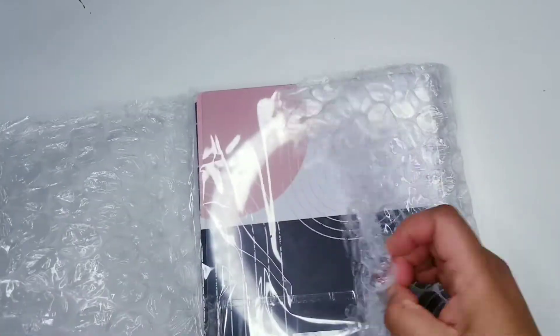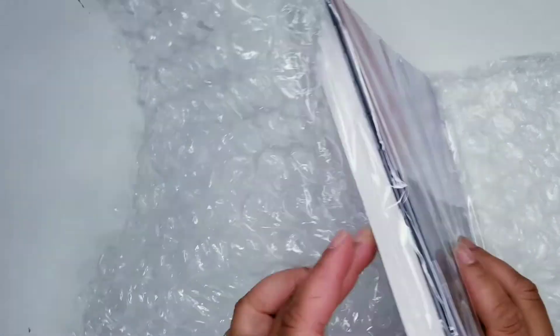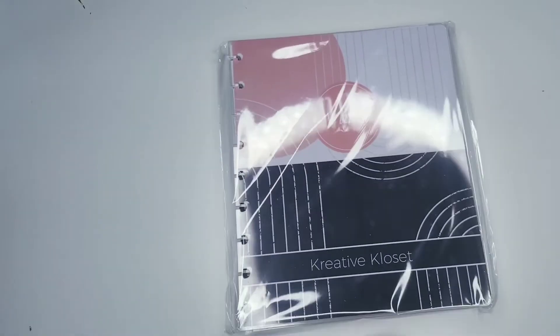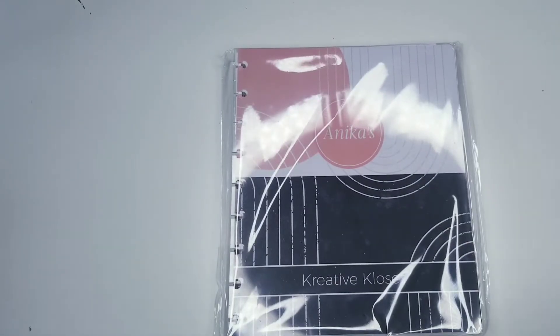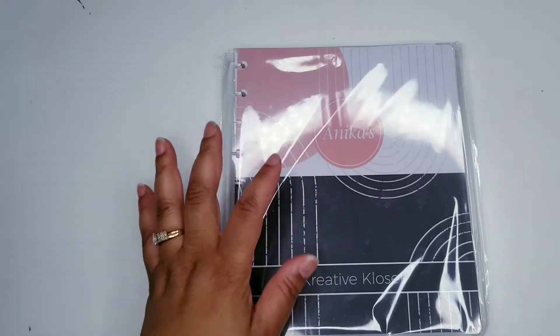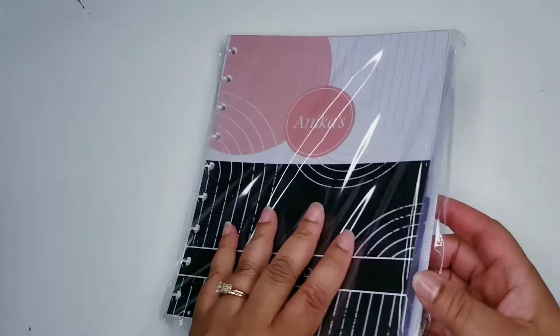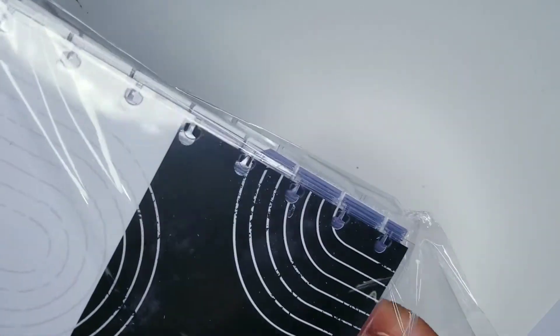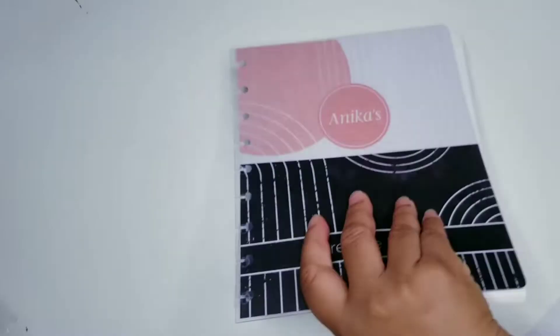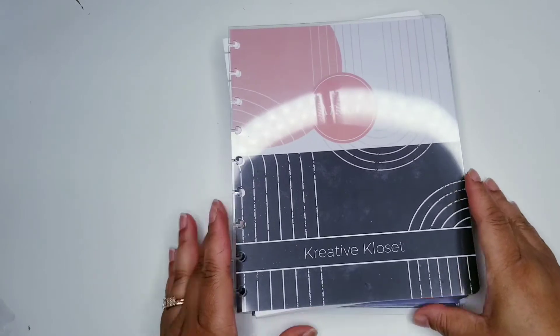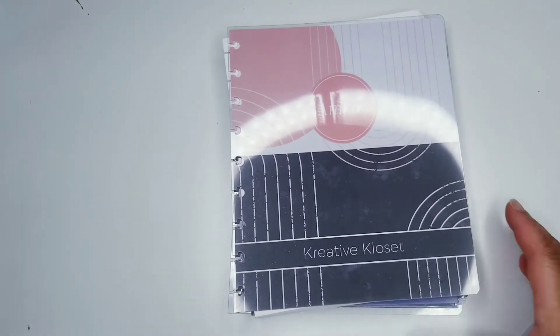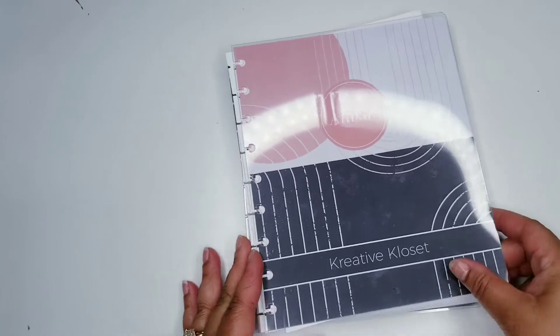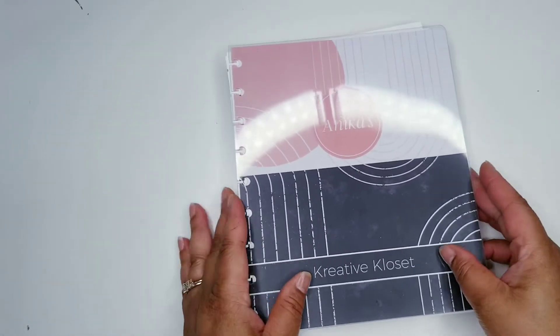So let's go ahead and look at what I have. And of course, you know, because I have a business, I wanted to put Anika's Creative Closet on there. And y'all, I got it where I can use a disc. I want it to be disc bound because I wanted where I can just take out pages and everything that I need.